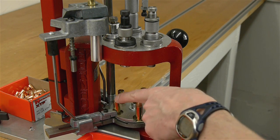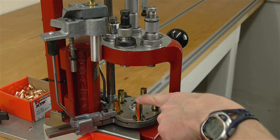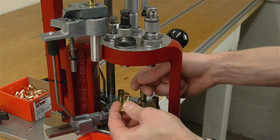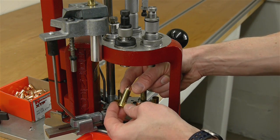So with five pulls of the handle a case will make its way from station number one where it's inserted all the way to station number five. In this case where we're doing the crimping and then the completed cartridge gets kicked into the completed cartridge bin.